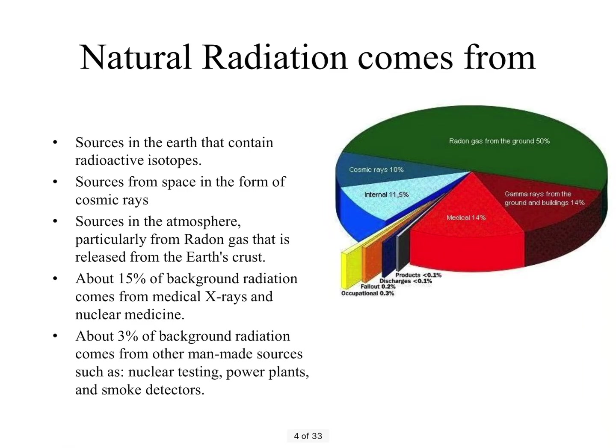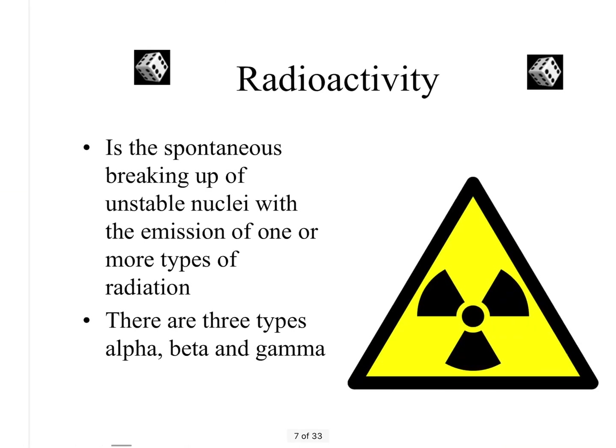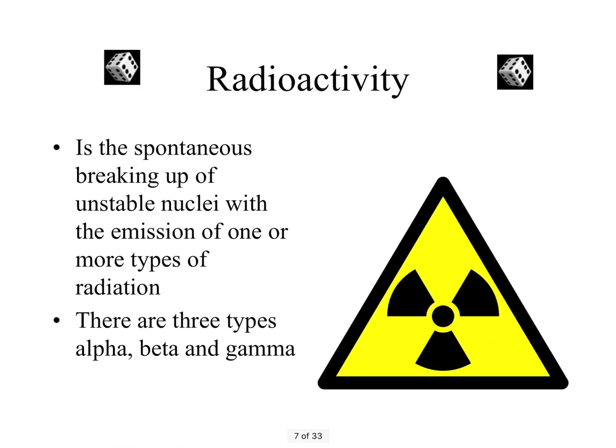There is background radiation all around us — natural radiation. As you can see from the pie chart, about half comes from the ground or rocks as radon gas, and some comes as cosmic rays from space. Your definition of radioactivity: it's the spontaneous breaking up of unstable nuclei with the emission of one or more types of radiation.